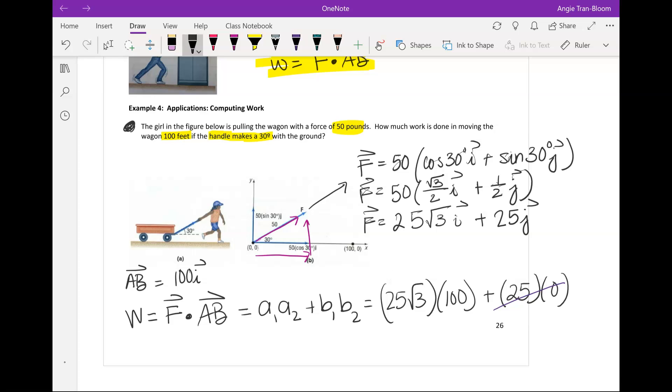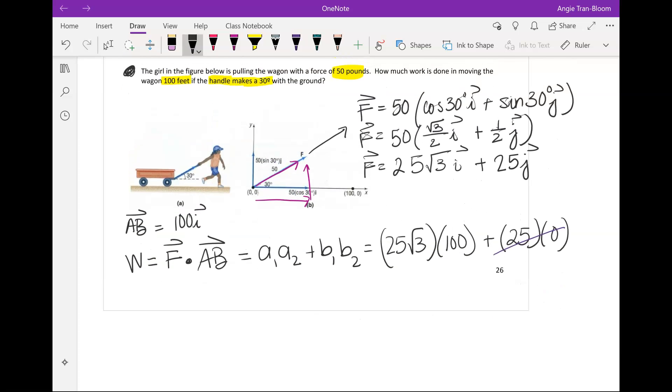So the work done is 2500 rad 3. And yes, you must give me the right unit of measurement, foot pounds. So this is the work. And that is the end of example 4. Actually, this is the end of chapter 9.